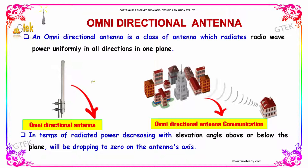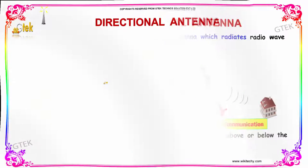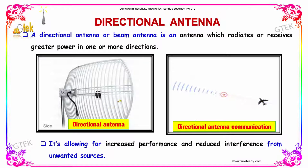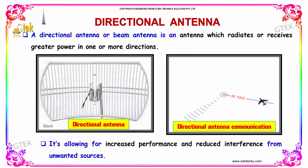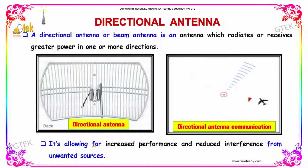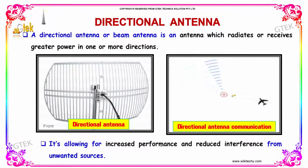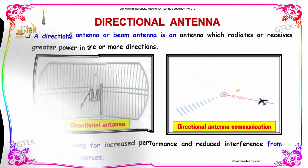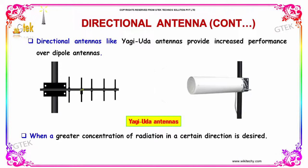You can see it's increasing. A directional antenna or beam antenna is an antenna which radiates or receives greater power in one or more directions, allowing for increased performance and reduced interference from unwanted sources. Directional antennas like Yagi-Uda antennas provide increased performance over dipole antennas when a greater concentration of radiation in a certain direction is desired.